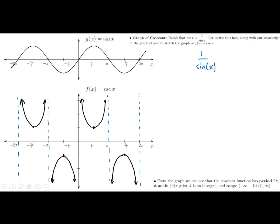The period of both the secant and the cosecant is 2π, which shouldn't surprise us because the period of sine and cosine are both 2π. Since we're talking about 1 over the cosine and 1 over the sine, we'd expect those functions to repeat over the same period.